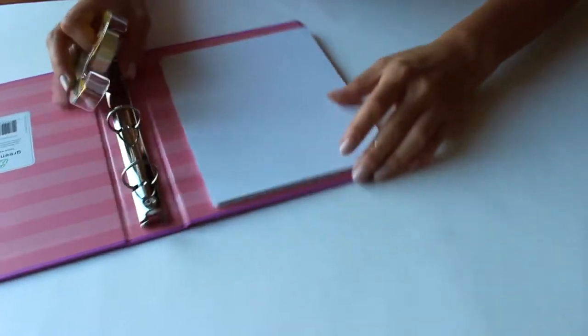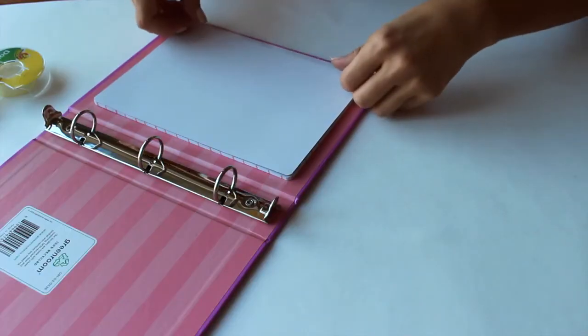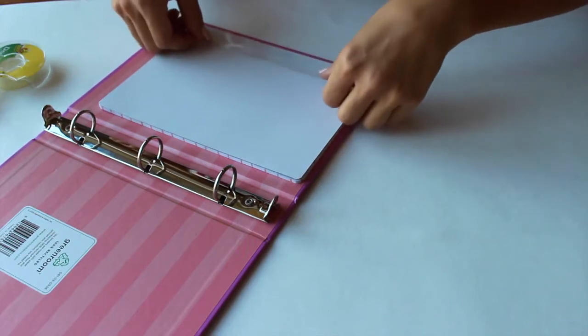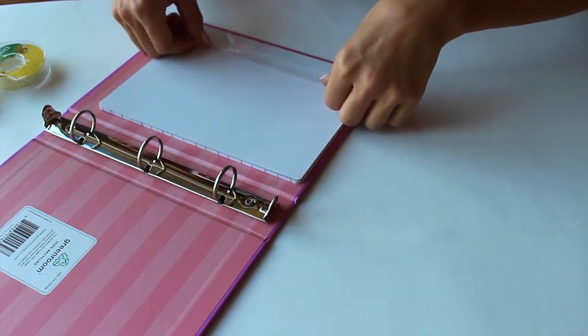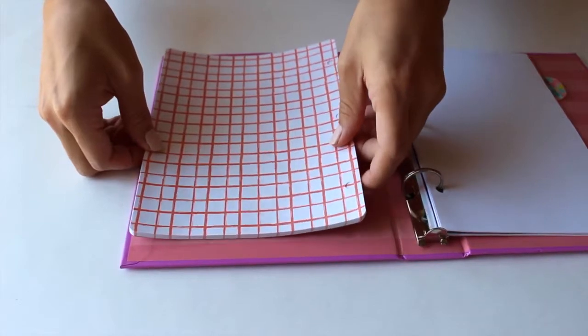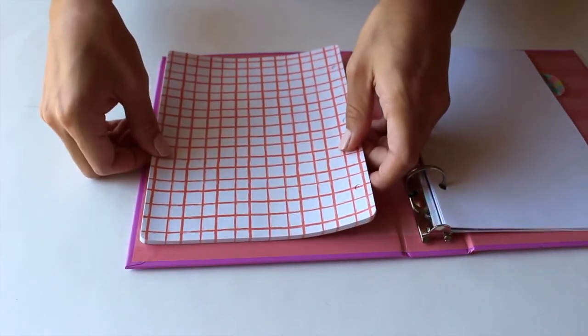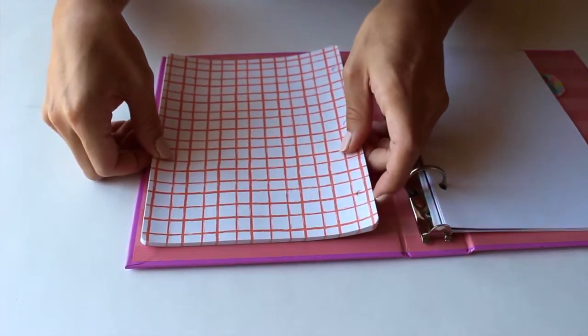I used some double-sided stick tape and put that on there, then stuck it on to where I'd put the scotch tape on the inside of my binder. I put it on the back so that when I open it, it's not flapping all over the place, but you can put it anywhere.